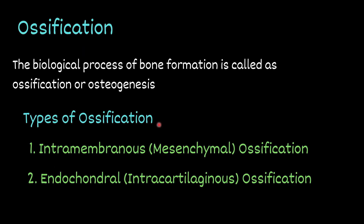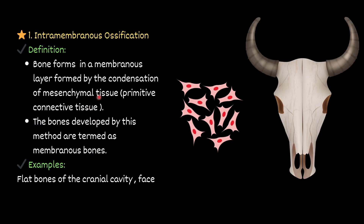There are two types of ossification: one is intramembranous or mesenchymal ossification, and number two is endochondral or intracartilaginous ossification. In intramembranous ossification, bone forms in a membranous layer formed by condensation of mesenchymal tissue — the primitive connective tissue. Bones developed by this method are termed membranous bones, for example the flat bones of the cranial cavity and the face.